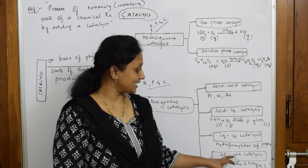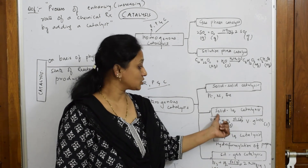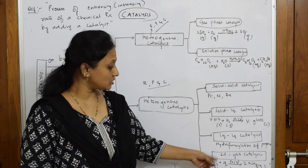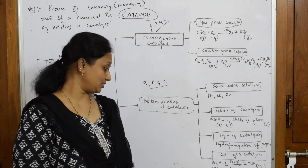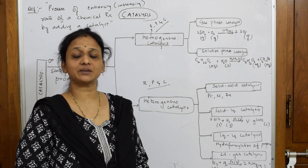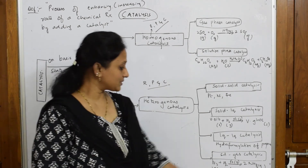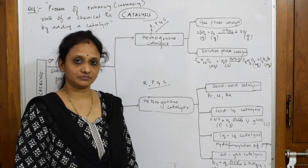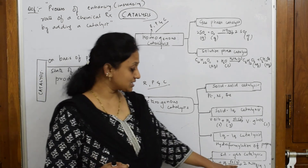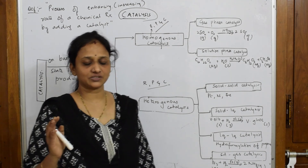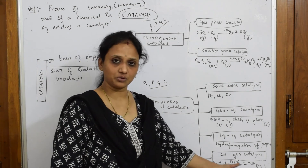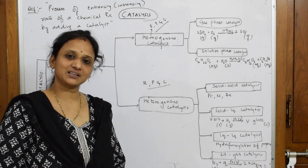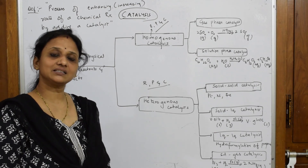For solid-gas catalysis, a good example is the formation of ammonia — Haber's process — where nitrogen gas and hydrogen gas react in the presence of iron catalyst, which is in solid phase. Nitrogen and hydrogen are both gaseous, the catalyst iron is solid, and the product ammonia is also gaseous. So you have two phases: solid for the catalyst and gaseous for the reactants and product. Remember to learn definitions and examples with their physical states.